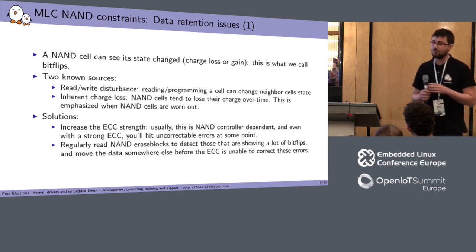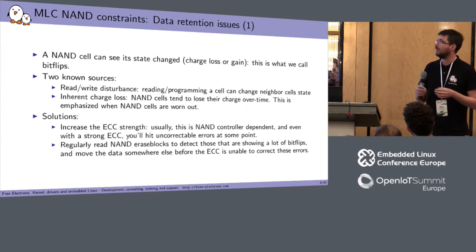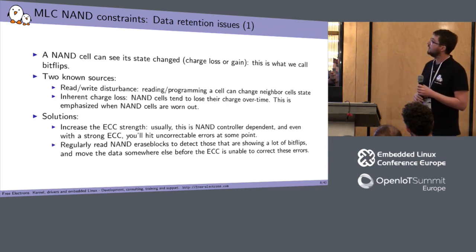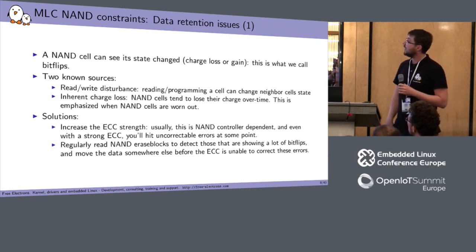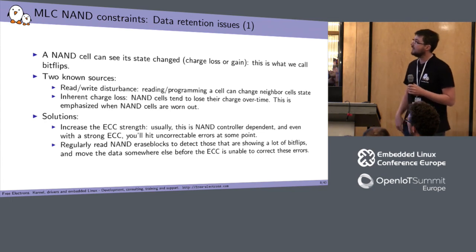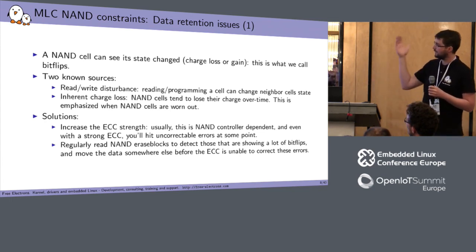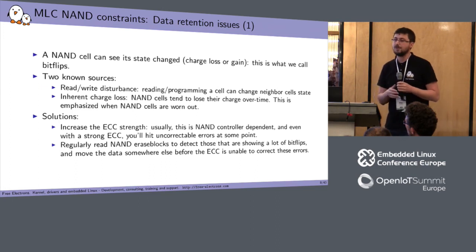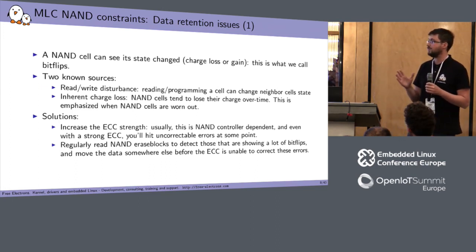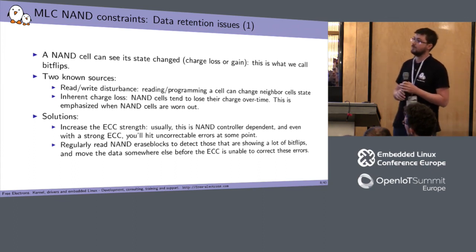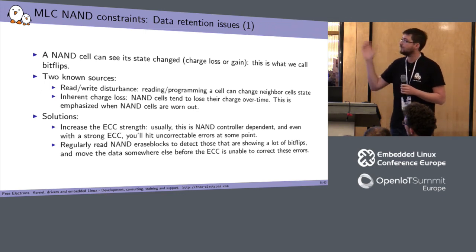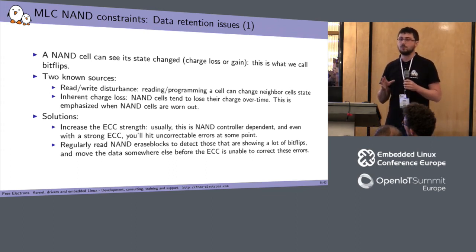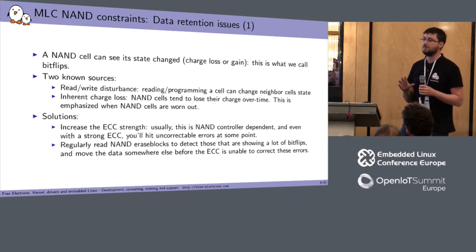MLC cells are smaller and closer together, so each program or read operation causes stronger disturbance. The only solution is to increase ECC strength, but you'll still eventually reach a level of bit flips you can't handle and must move the data elsewhere — which is exactly what UBI does. When UBI reads a block, it checks the number of bit flips and, if the block is going to become unreadable soon, moves the data somewhere else.